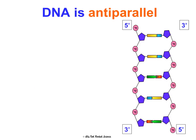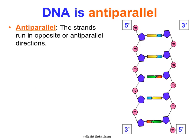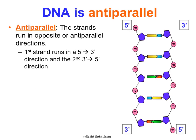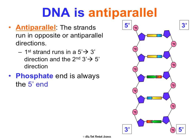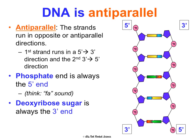Another important feature of DNA structure is that it's anti-parallel, meaning the strands run in opposite directions. One strand runs 5' to 3', and the other goes 3' to 5'. The 5' end is the side with the phosphate — five and phosphate sound similar, which helps to remember it. The 3' end is the side with the sugar. This anti-parallel nature is going to be really important when we get to replication.